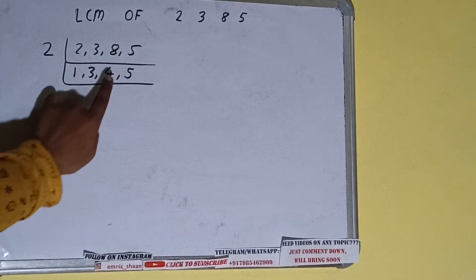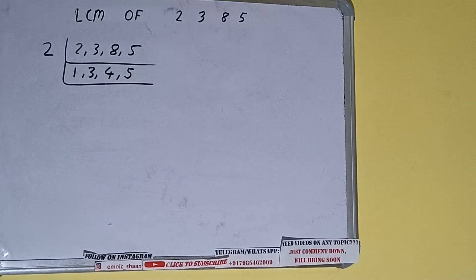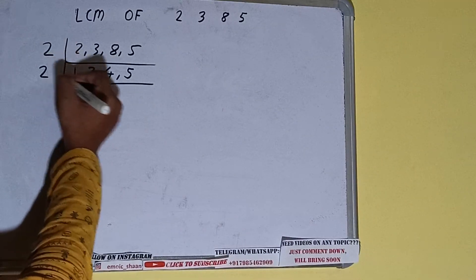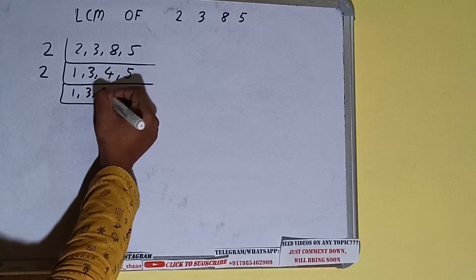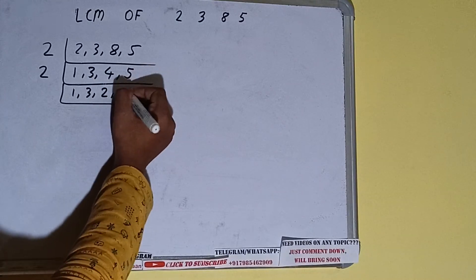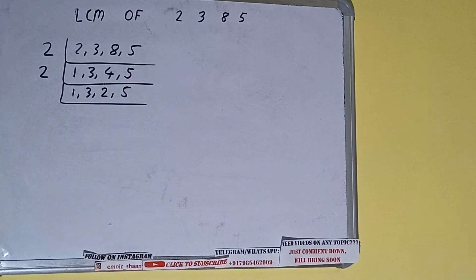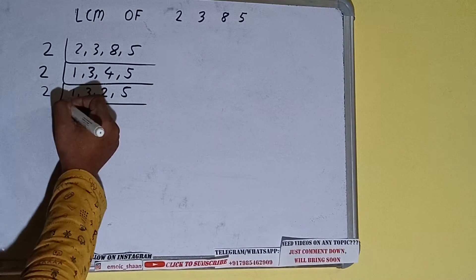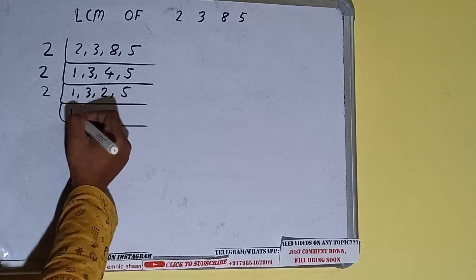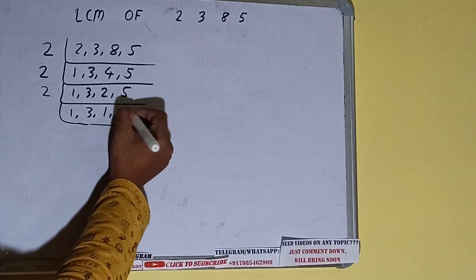Again we check: is any number divisible by 2? Only the 4 is divisible by 2, so we divide only that number and copy the others down. We write 2 here: 1 stays 1, 3 stays 3, 4 becomes 2, and 5 stays 5. We check again — only that 2 is divisible by 2, so we divide it and get 1, 3, 1, 5.